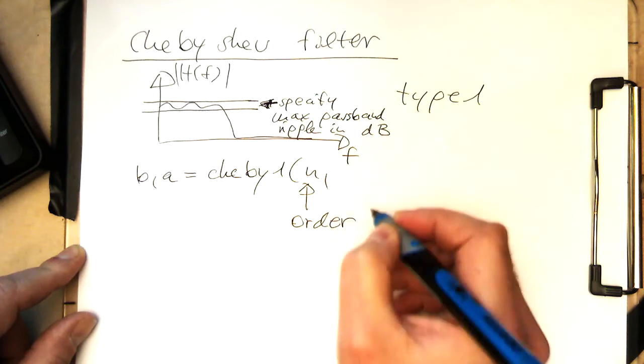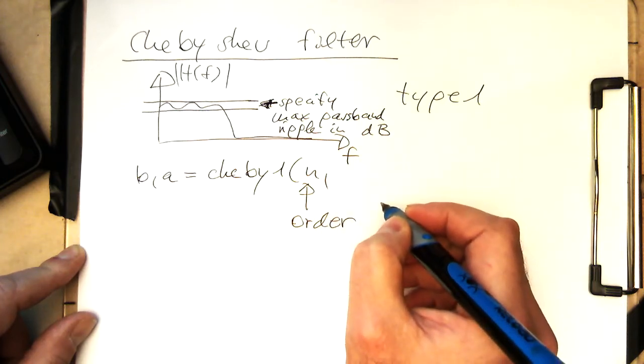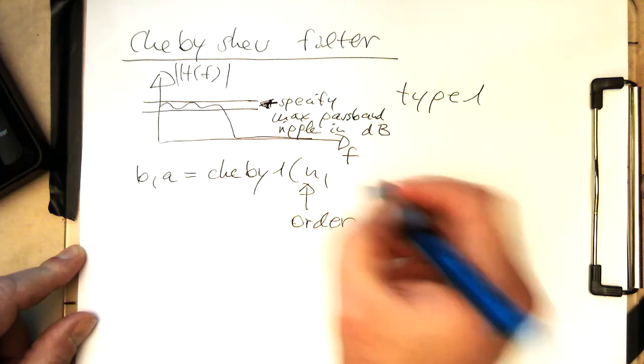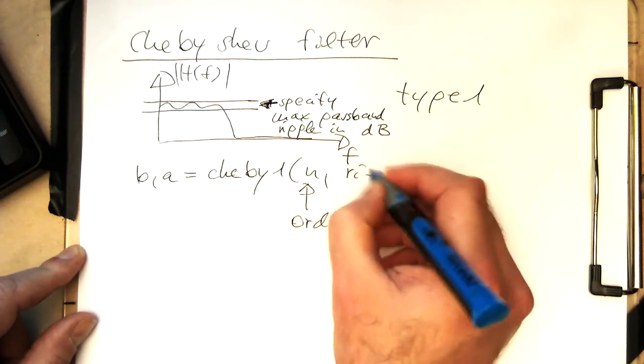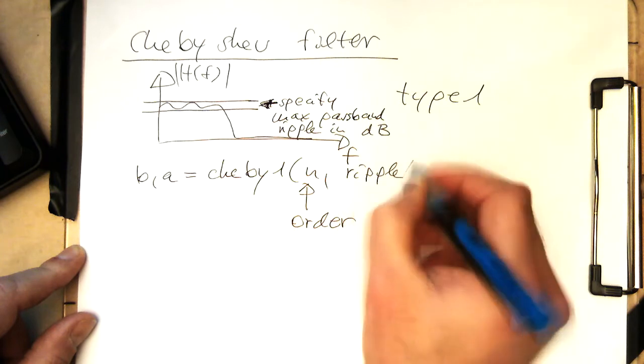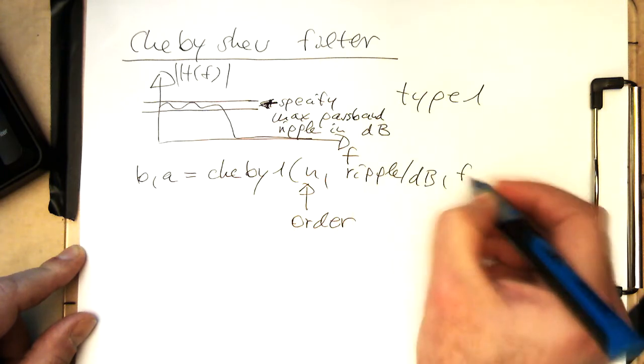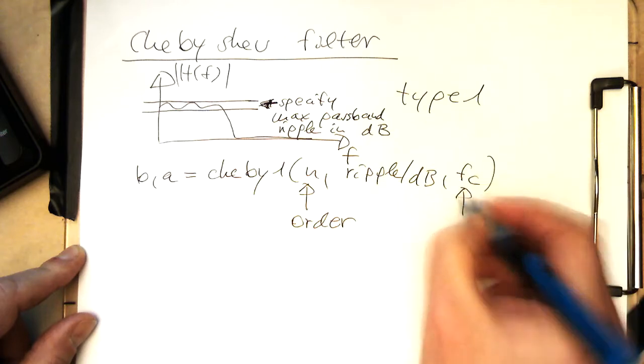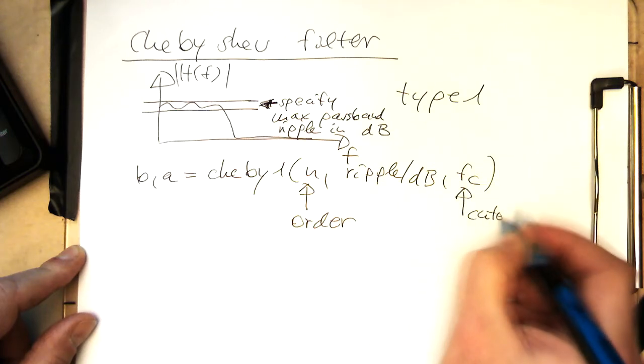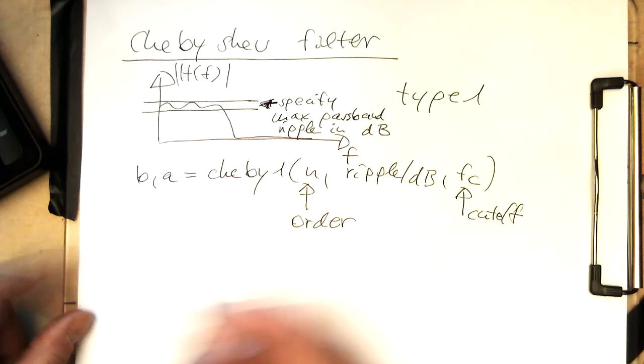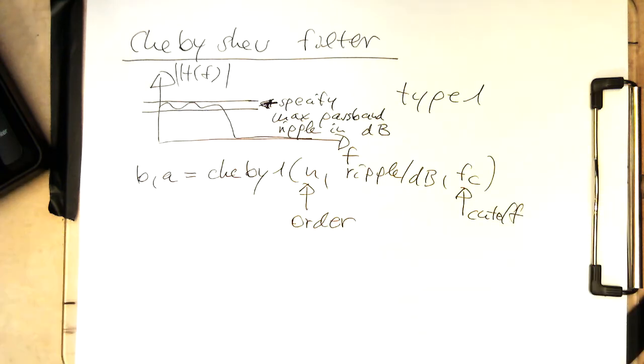the same way as we have defined this before. So then here we've got the ripple in decibel, and then FC, the cutoff.